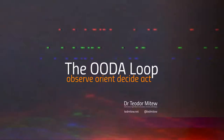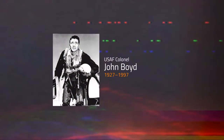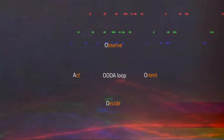Hi everyone, my name is Taylor Mitev, and in this lecture I want to talk about the OODA loop. The OODA loop is a theory that started as a theory of maneuver warfare developed by US Air Force Colonel and fighter pilot John Boyd. He started developing this model following the Korean War, distilling the process into four key stages: observe, orient, decide, and act — hence OODA — to be performed continuously in a feedback loop, hence loop.